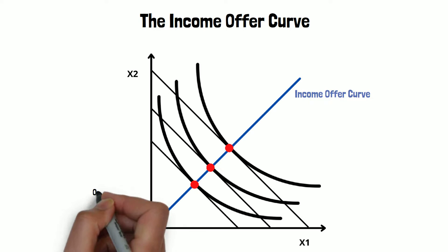This curve always starts at the origin. This is logical because when income is zero, consumption is also zero. In the case on your screen the income offer curve is positively sloped, meaning that the increase in income increases the consumption of both goods. For this reason we can conclude that we are dealing with normal goods in this case.